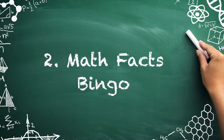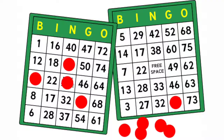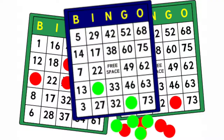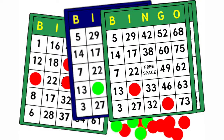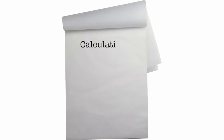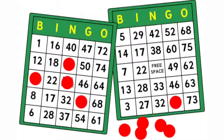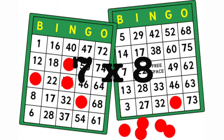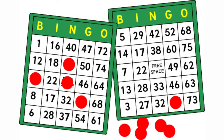Number two: math facts bingo. Make fact fluency drills engaging by playing this version of bingo. First, create bingo cards that contain answers to different multiplication tables. Second, hand them out to students and make sure they have a separate sheet for calculations. Finally, instead of calling numbers, state equations such as seven times eight. After determining the product is 56, they can check off the number if it's on their cards.